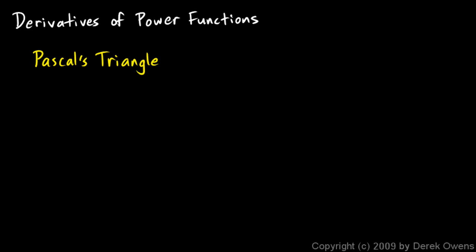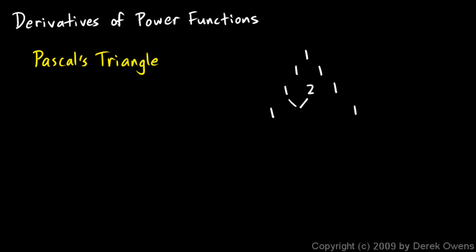Pascal's triangle: you put a 1 at the top, and then a 1 and a 1. The first row just has a single number, the second row has two numbers, and then the next row will have three numbers — the numbers on the outside are always 1. The number in the middle is made by adding those two together, so in the middle I end up putting a 2. Then the next row: 1 on the outside, then 1 plus 2 gives me a 3, and 1 plus 2 there gives me a 3.